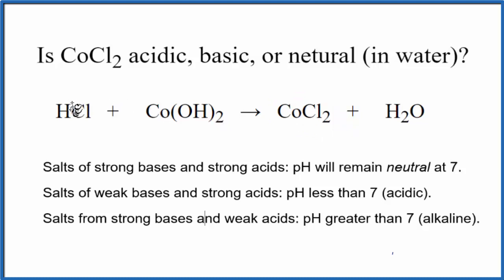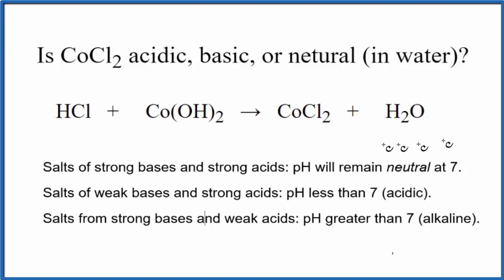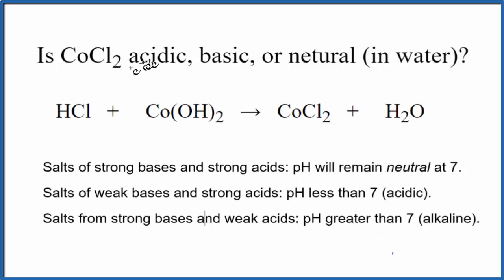In this reaction, we have an acid plus a base. That gives us the salt, cobalt-2 chloride, and water — it's a neutralization reaction. Once we have the equation, we need to figure out the strength of the acid and the base, so we can use these rules to figure out whether CoCl₂ is acidic, basic, or neutral.